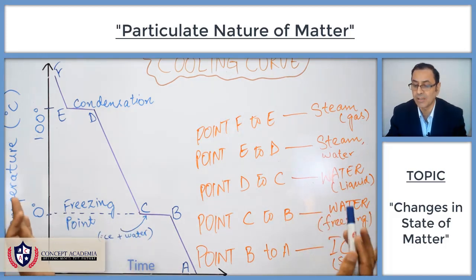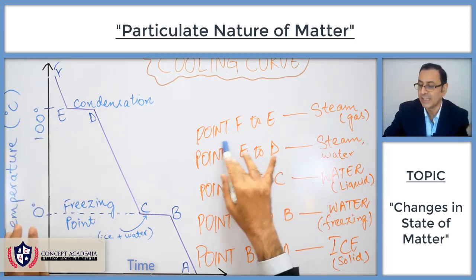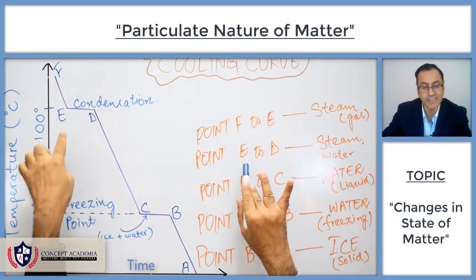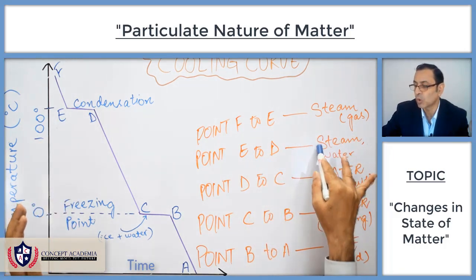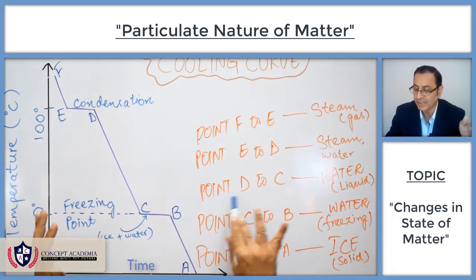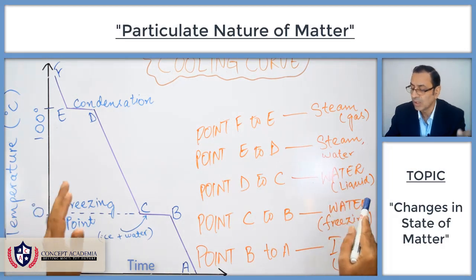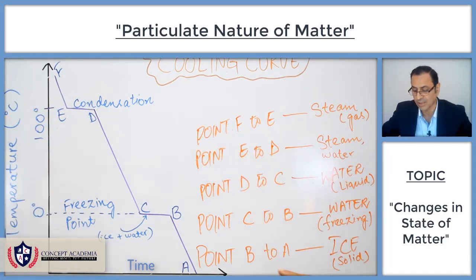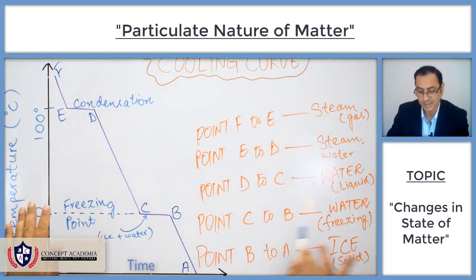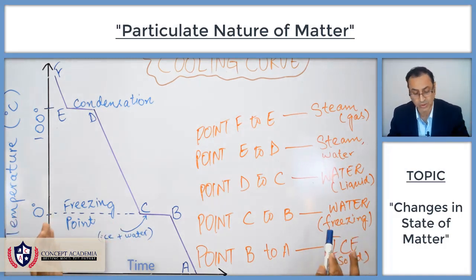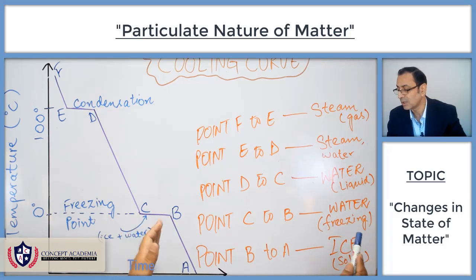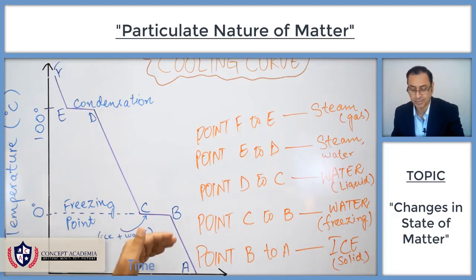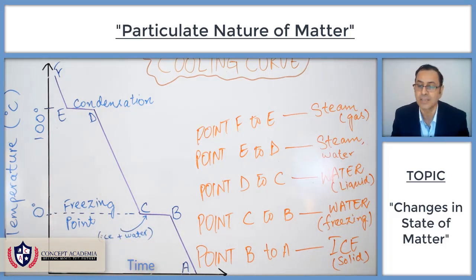On the cooling curve: from point F to E, it is steam and its temperature is falling down. From point E to D, steam and water coexist — that is the condensation point. From point D to C, it is all liquid water and its temperature is falling down. From point C to B, the water is freezing and converting from liquid water into ice. And from B to A, it is ice and its temperature is falling down. This is about the cooling curve.